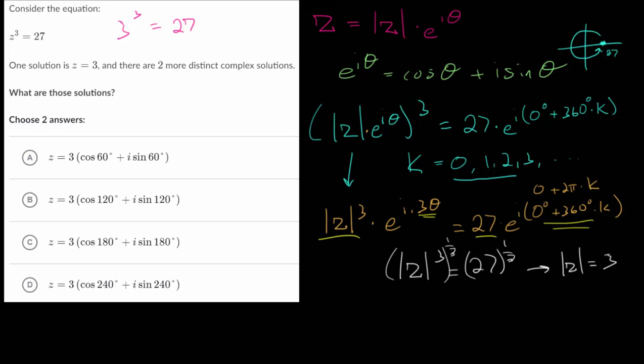And for the angle, we will set up another equation for that. We will say the angle here, which is 3 theta, is equal to the angle on the right, which is 0 degrees plus 360 degrees times by k. And we'll solve for theta by dividing each side by 3. 0 over 3 is still 0. But we get 120 degrees here multiplied by k. And to find the various angles of our solutions, our three solutions, we'll just plug in the different values of k.